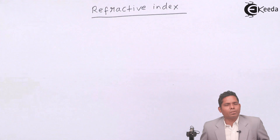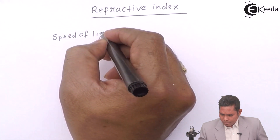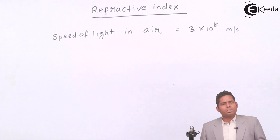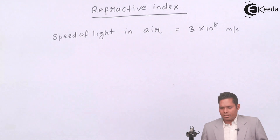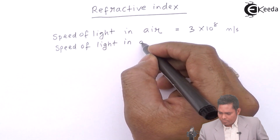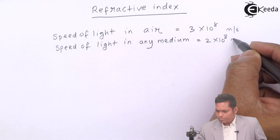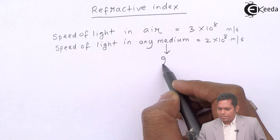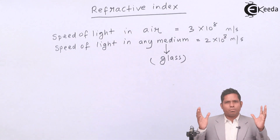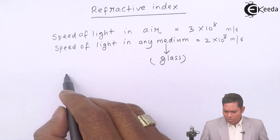Suppose the speed of light in any other medium — say glass — when light passes through glass, its speed is less than the speed in air. Suppose the speed is 2 × 10⁸ meters per second. Then, refractive index, denoted by mu, is defined for glass with respect to air.